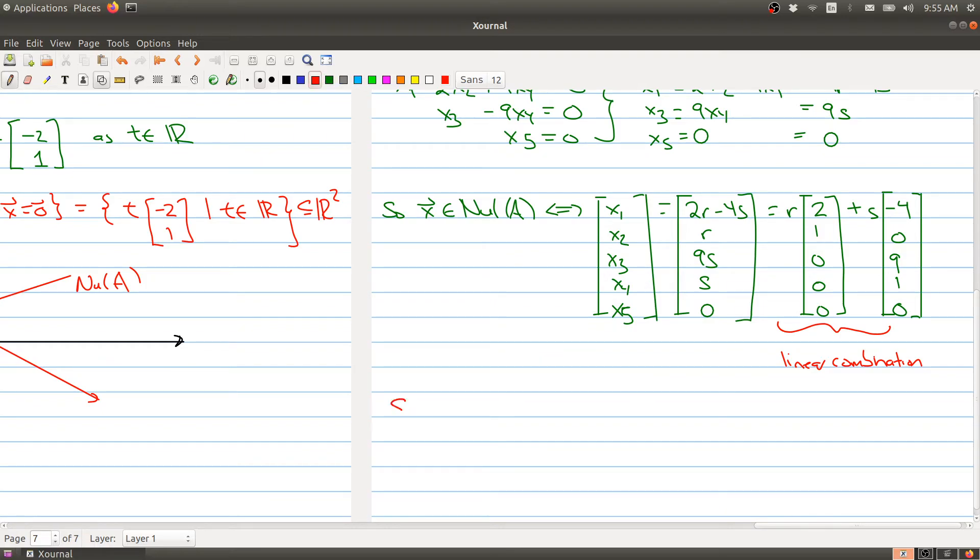What we have is the null space is equal to the span of [2, 1, 0, 0, 0] and [-4, 0, 9, 1, 0].